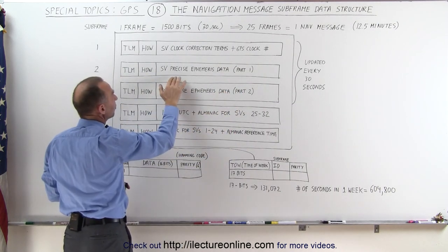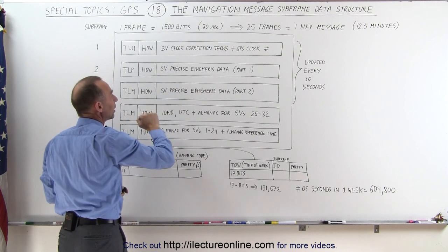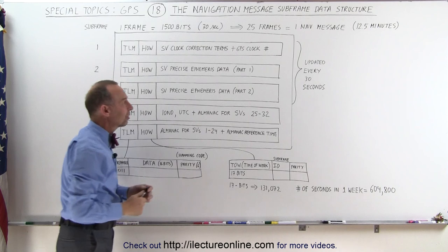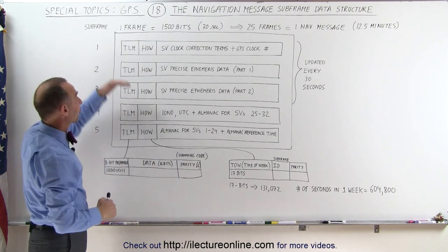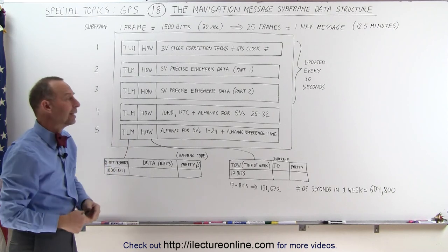The second contains the precise ephemeris data of the Space Vehicle that we're in communication with, and so does the third subframe because it doesn't all fit into a single subframe. Notice that the first three subframes are repeated every 30 seconds with updated data.